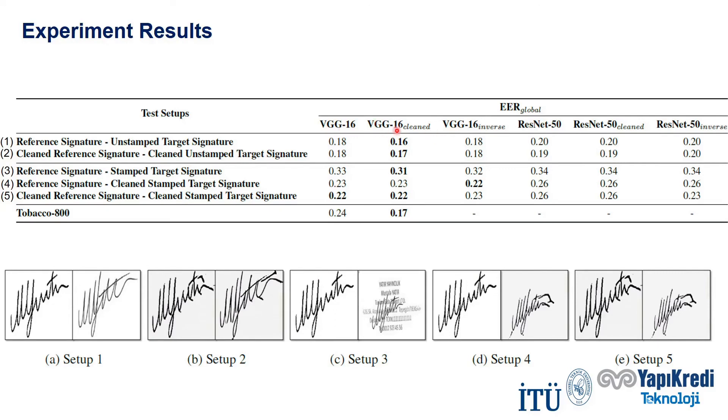First model is trained with original signature images. Second one is trained with outputs of our CycleGAN method. And third one is inverse version of original signatures where background is black and signatures are white.